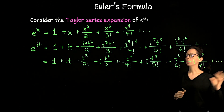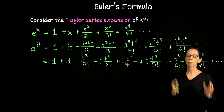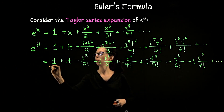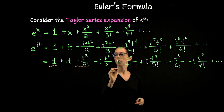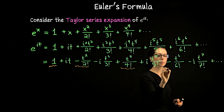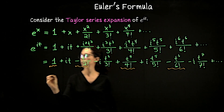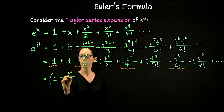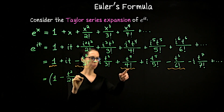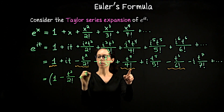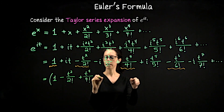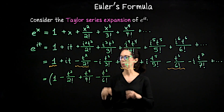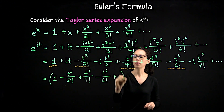This is a complex expansion, so let's group it into real terms and imaginary terms. The real terms are 1, negative t squared over 2 factorial, the 4th order term, the 6th order term: so 1 minus t squared over 2 factorial plus t to the 4th over 4 factorial minus t to the 6th over 6 factorial. The next real term would be plus t to the 8th over 8 factorial, but I'll omit writing that.